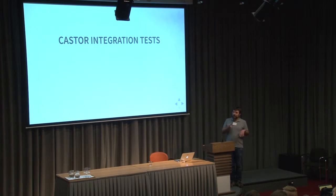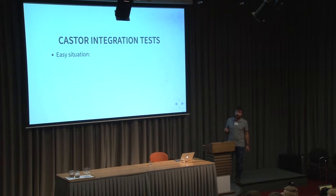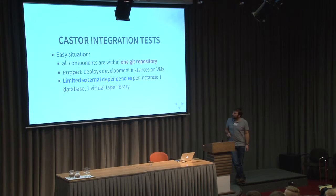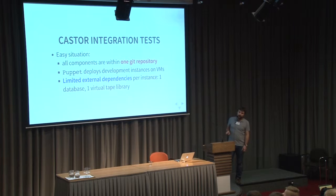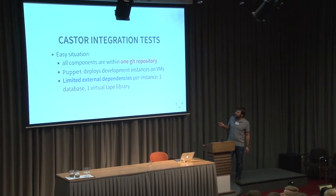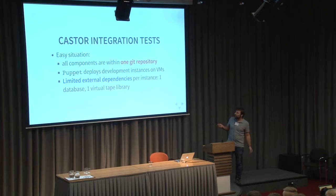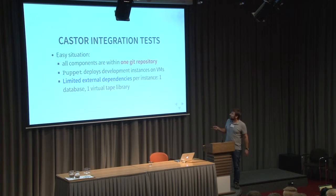Let's see how we were doing integration tests in CASTOR. The situation for CASTOR was easy — it's just a single component. Everything is in one Git repository. It's a single software containing disk and tapes. We were using virtual machines to deploy with Puppet, and we had a limited set of external dependencies per developer instance: one database and one virtual tape library, because we need to work with tapes. Though it's a bit complicated that way.